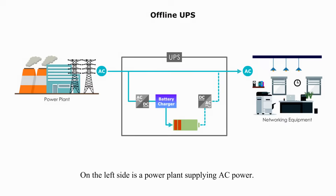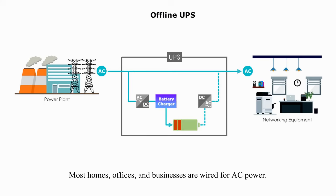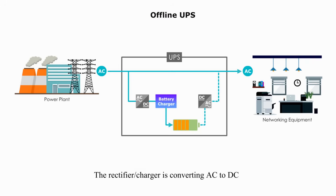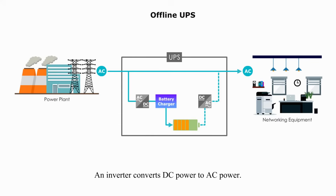On the left side is a power plant supplying AC power. AC means alternating current. Most homes, offices, and businesses are wired for AC power. DC stands for direct current — most electronic devices such as computers or cell phones use DC power. The rectifier or charger converts AC to DC and charges the battery. An inverter converts DC power back to AC power.